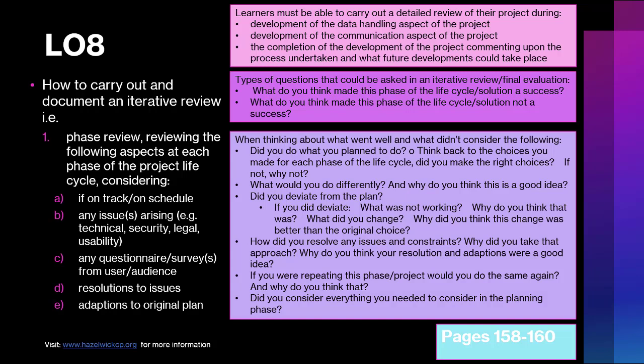The specification gives guidance on what types of questions could be asked for the iterative review: What made this phase of the project life cycle a success? What made it a non-success? When thinking about what went well and what didn't — did you do what you thought you would? Did you think back to the choices you've made? You can use all of these questions in your iterative review. Use this part of the specification to form a template for your review.